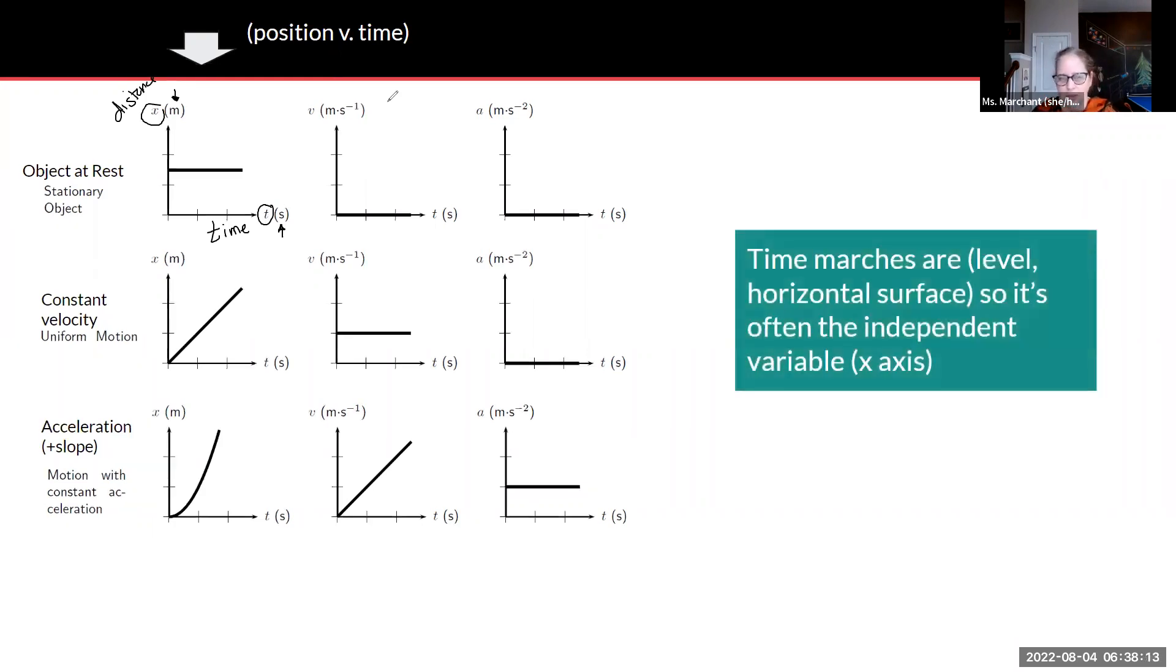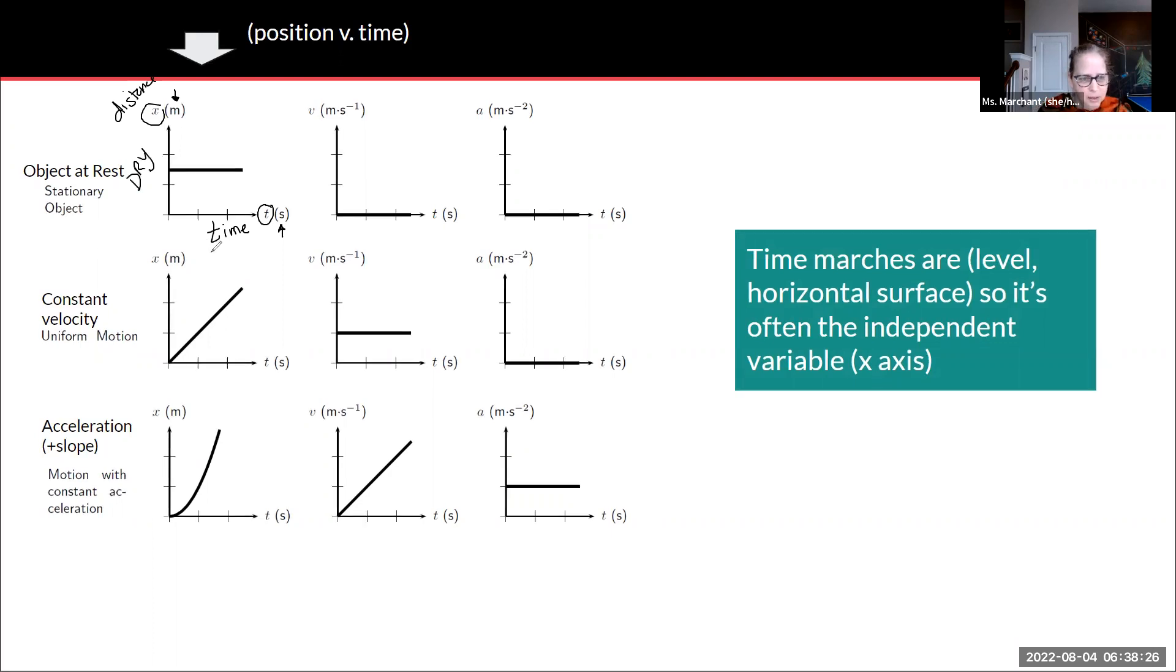How do you remember which one's which? I think of it as time marches on, because time, if somebody's marching, they're on that level horizontal surface. And remember that is your independent variable. If you want to know the acronym to help you remember that, DRY MIX: dependent responding on the y-axis, manipulated so it's independent on the x-axis.